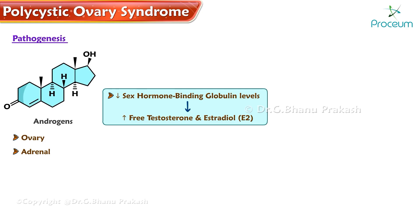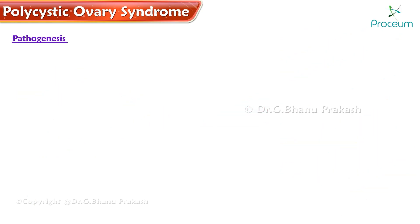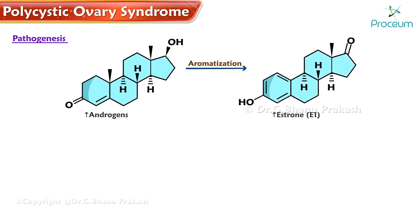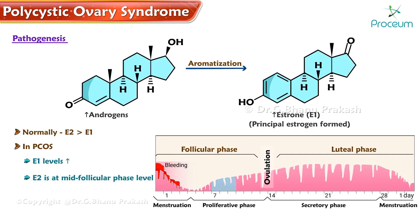All androgens released from the ovary and adrenal undergo peripheral aromatization, mainly in adipose tissue, as adipose has higher levels of aromatase activity. These excess androgens undergo excess aromatization to produce excess estrone (E1). Estrone is the principal estrogen formed due to aromatization. Normally in the body, E2 is always greater than E1, but in patients with polycystic ovary syndrome, E1 levels are increased and E2 is at mid-follicular phase level.